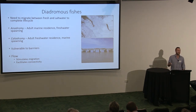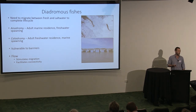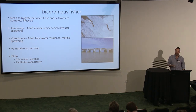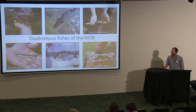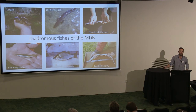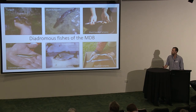Given that these fish have to undertake these migrations — it's critical for their life history — they are probably the most vulnerable species to obstruction of migration by flow-regulating structures. In the modern river they're highly dependent on flow to stimulate migrations and facilitate connectivity. In the basin, eight species have been recorded in the past, six of which were formerly common. They're mostly catadromous, with the exception of short-headed lamprey and pouched lamprey, which are anadromous.